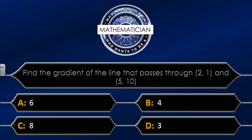Question five: find the gradient of the line that passes through the points (2, 1) and (5, 10). The four possible answers are: A equals 6, B equals 4, C equals 8, D equals 3. I'm going to give you 20 seconds — this is a tough one.